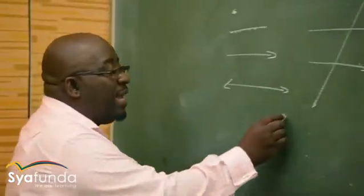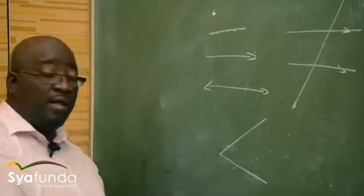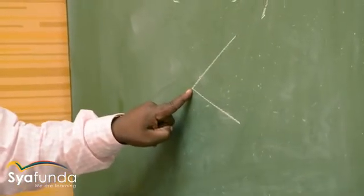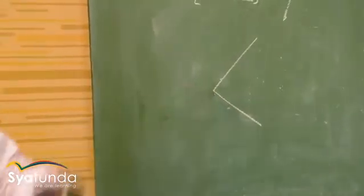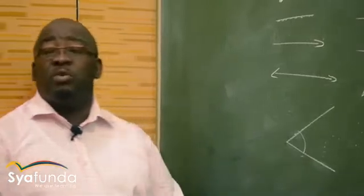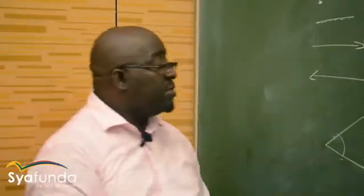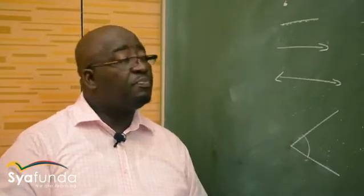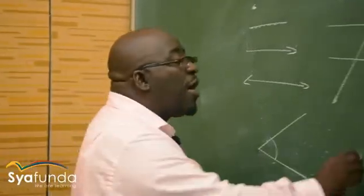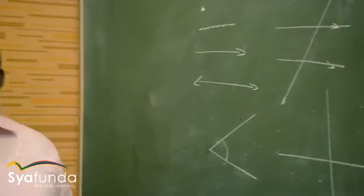When two lines are joined together at a particular point, that point is called a vertex. The opening formed by two lines meeting at a common vertex is called an angle. We can easily see different types of angles by referring to the Cartesian plane.